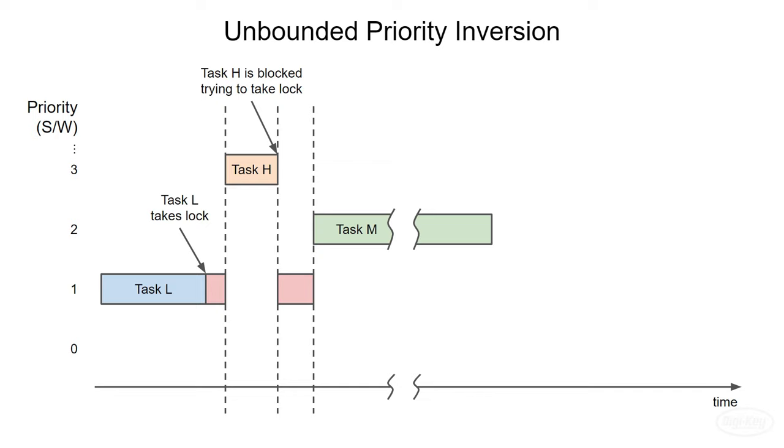As you can see, task H is still blocked, and it will remain blocked so long as task L has the mutex. And task L won't run to release the mutex as long as task M is running. This is known as unbounded priority inversion, as task M can potentially run forever, starving task H, even though task H has a higher priority. Only when task M is done will it yield to task L, which will release the lock and then let task H run.